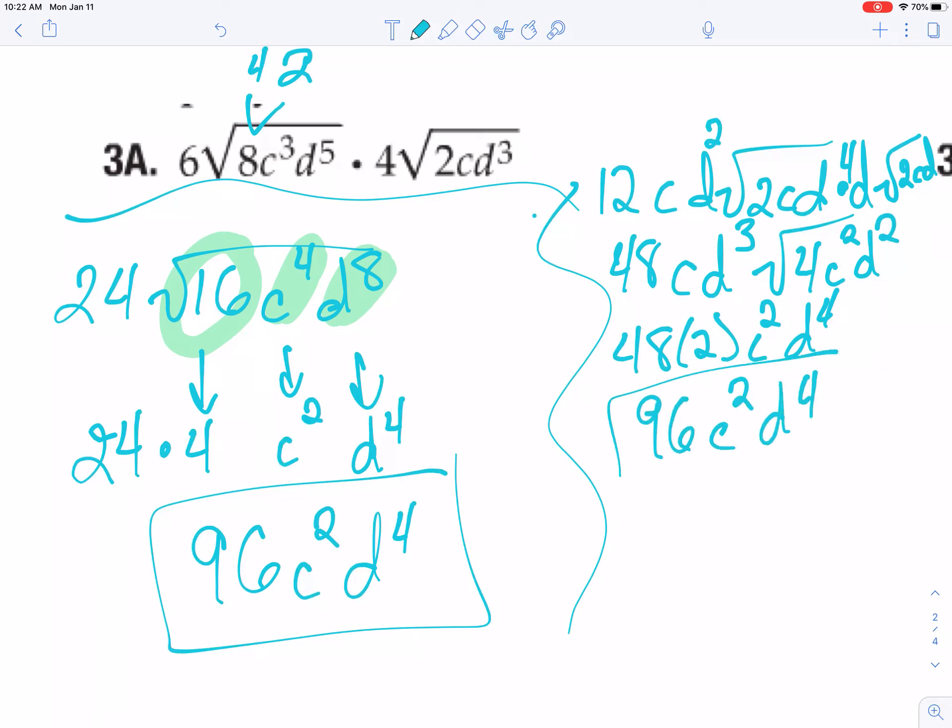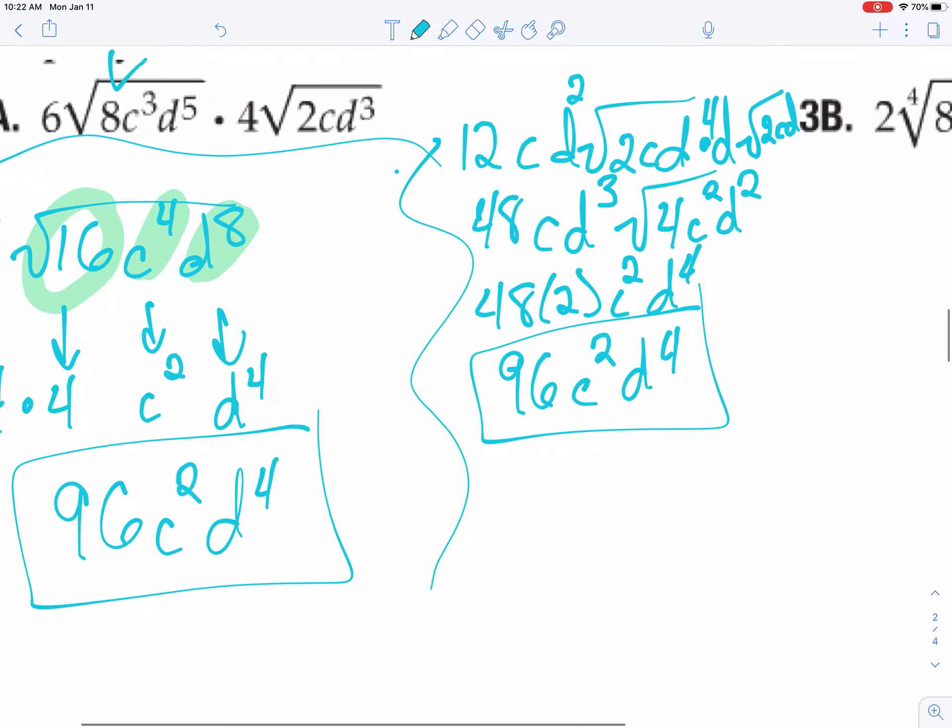96c squared d to the 4th. I know I didn't explain it super well, but you can see that it was a lot more work than if you just multiply from the start. So that's how you do those.